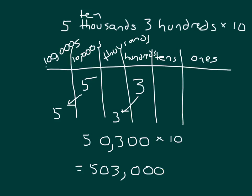Another type of question I might ask: how many ten-thousands are within this number? There's a zero in that place, but there's actually a five in the hundred-thousands place, so there are fifty ten-thousands in this number. How many thousands are in this number? There would be five hundred three thousands in this number, or even five hundred three-thousand ones.